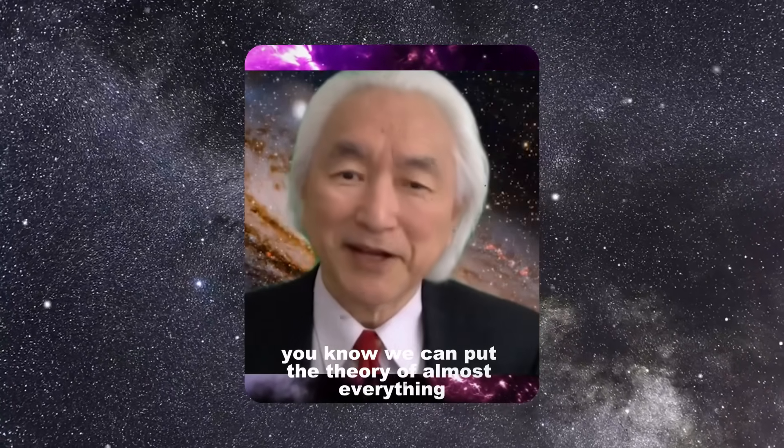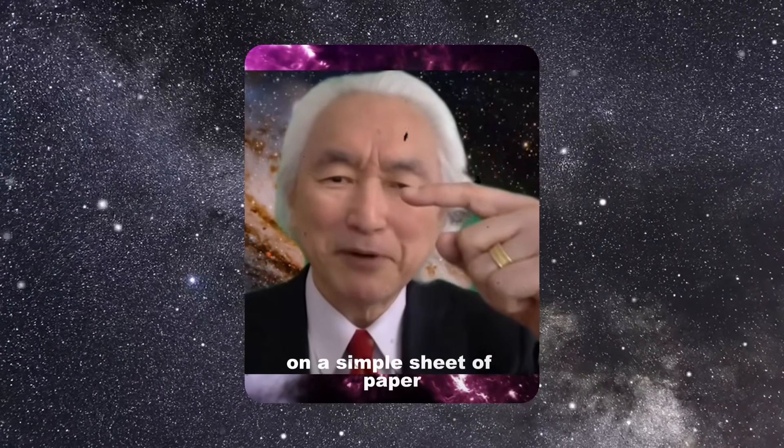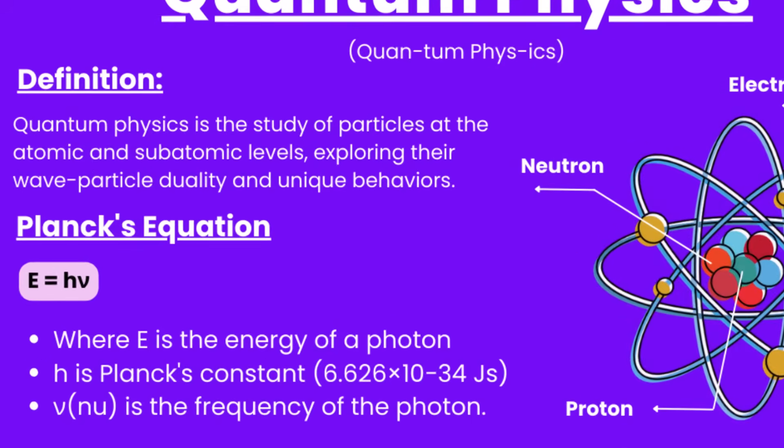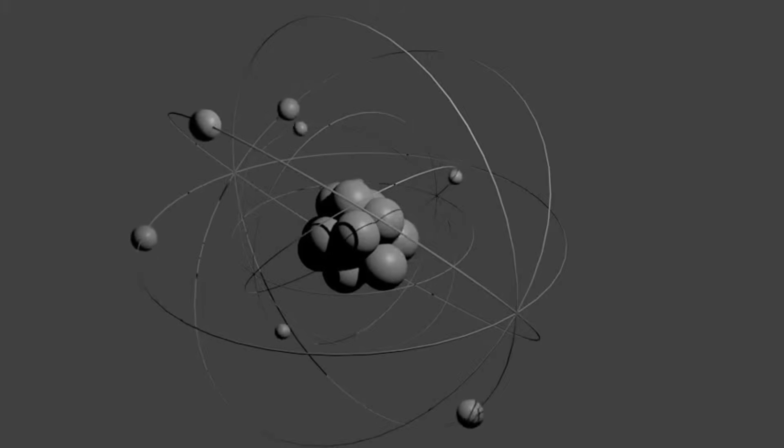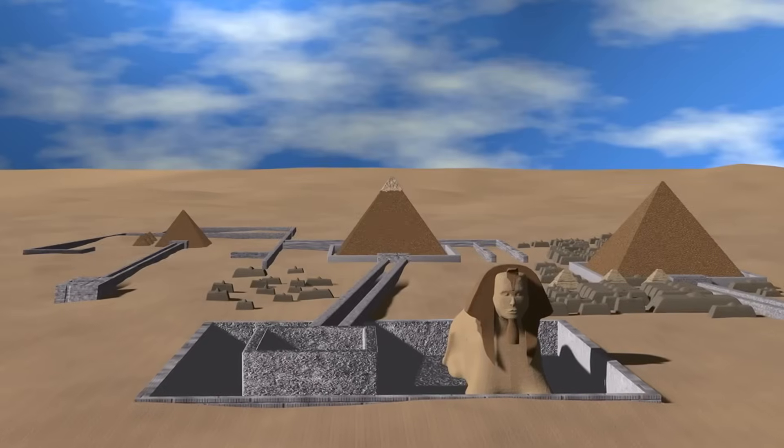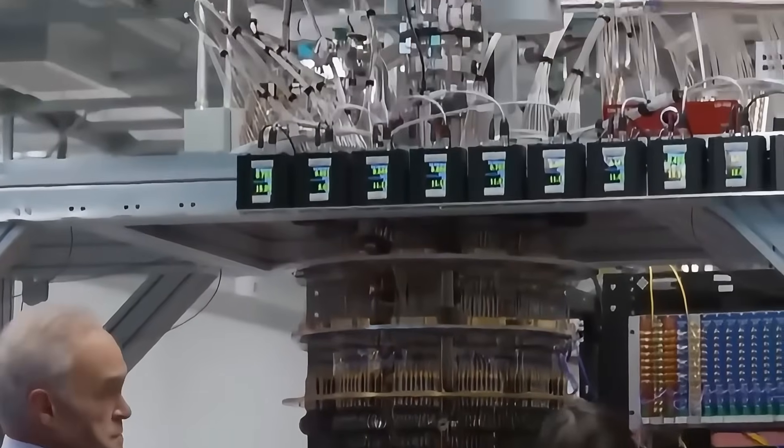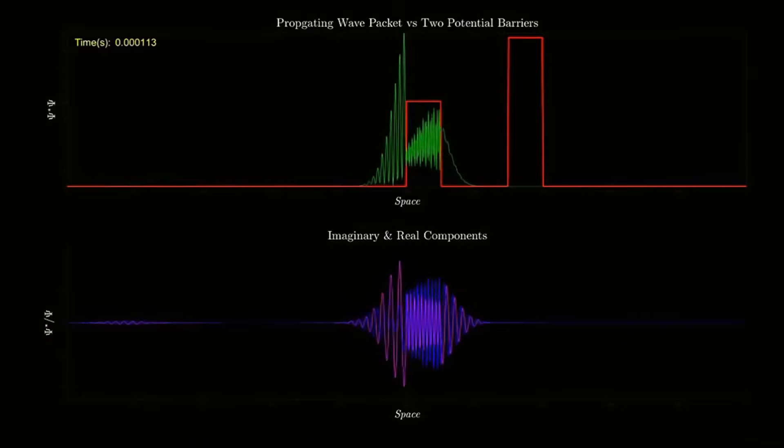We can put the theory of almost everything on a simple sheet of paper. What if ancient prophets described the rules of quantum physics long before we even knew atoms existed? Imagine words penned thousands of years ago that echo the strangest discoveries of modern science—particles in two places at once, instant connections across the cosmos, reality shaped by observation.